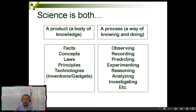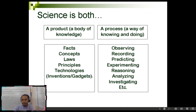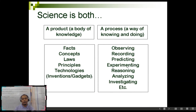Science can also be a process — a way of doing things and knowing things. When we say it's a process, science involves observing, recording, predicting, experimenting, reasoning, analyzing, investigating, and so on — as long as it involves process.